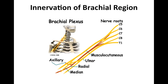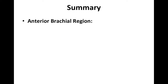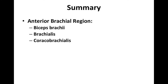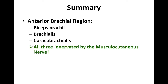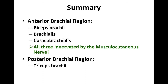It's important to know what innervates the brachial muscles. The anterior brachial muscles are innervated by the musculocutaneous nerve, while the posterior brachial muscles are innervated by the radial nerve. In summary, the anterior brachial region consists of the BBC — biceps brachii, brachialis, and coracobrachialis — and all three are innervated by the musculocutaneous nerve. The posterior brachial region consists of the triceps brachii, and this is innervated by the radial nerve.